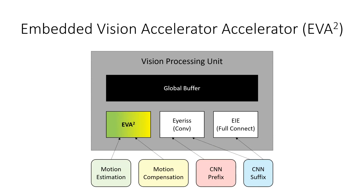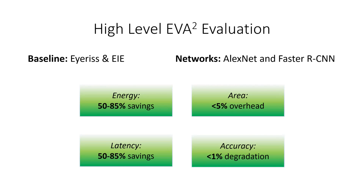To see how this works in a hardware system, we compare ourselves against a baseline of IRIS and EIA, which are embedded vision accelerators, and add EVA Squared — the embedded vision accelerator accelerator — for performing the computation for motion estimation and compensation. We compare this on networks such as AlexNet and FasterRCNN. We find that we can get 50% to 85% savings on energy and latency from computation, with less than 5% area overhead and less than 1% accuracy degradation.